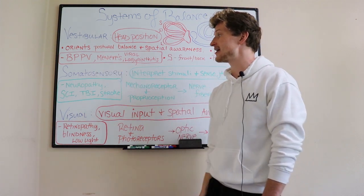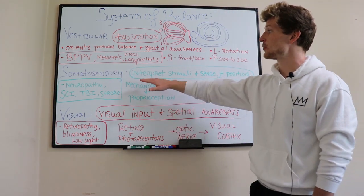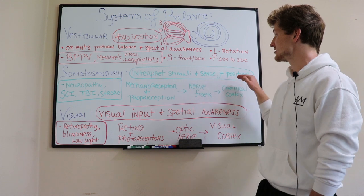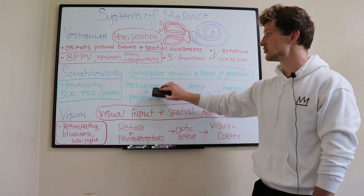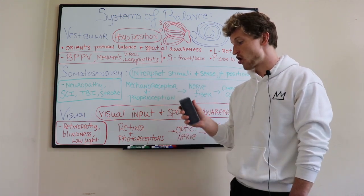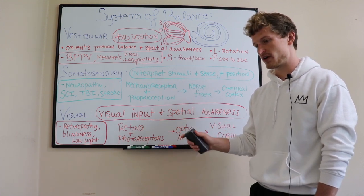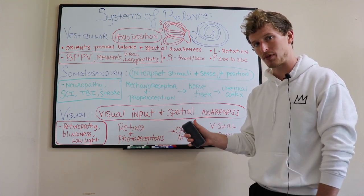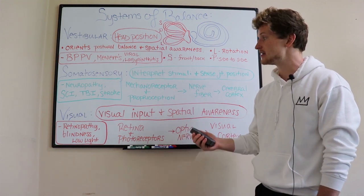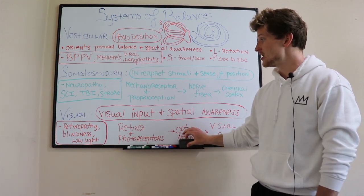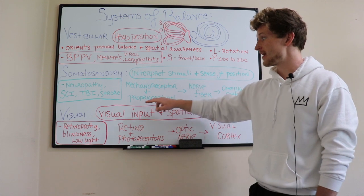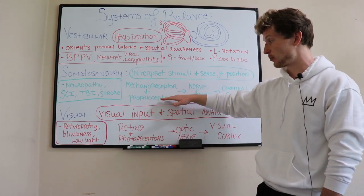The next one is your somatosensory system, which interprets stimuli and senses joint position. You have mechanoreceptors, which are receptors that tell me I am picking something up, this is what it feels like, this is the pressure I'm applying to it, this is how heavy it is. They send input to a nerve fiber, along with proprioception.